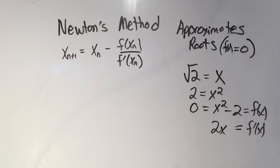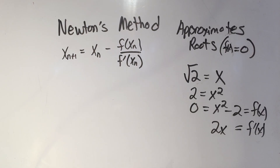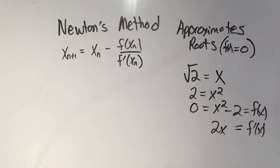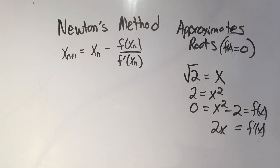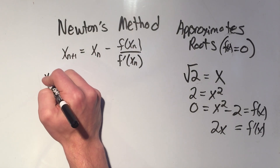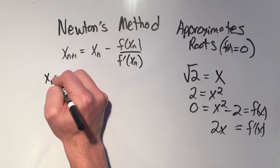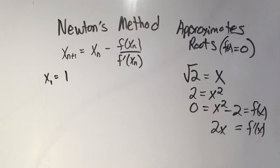You have to pick a starting place. What is the square root of 2 close to? If you plug it into a calculator it's like 1.4. So why not start at 1 and see what happens — you want to pick something kind of close to the answer. So I'm going to say x1 equals 1.